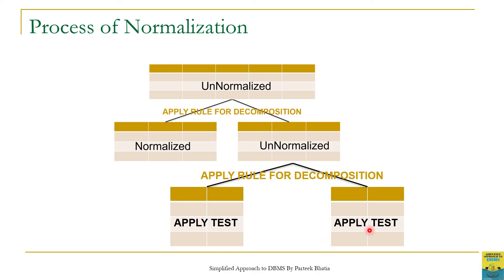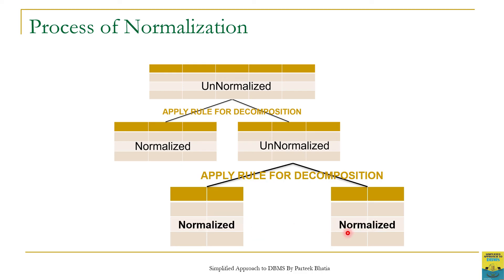By applying the rule of decomposition, this table is decomposed into two smaller tables. We then apply the test on these smaller tables. If they satisfy the test, they are considered normalized. If any table still fails, we repeat the process of decomposition until the smaller tables satisfy the normalization test. In the end, we have all normalized tables — the original larger table is normalized into these three small tables.